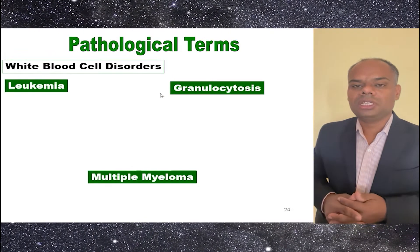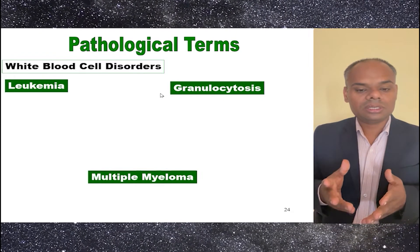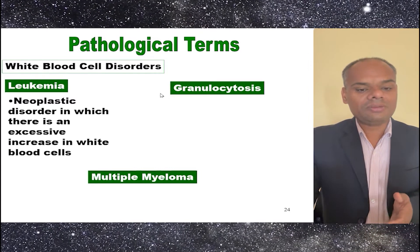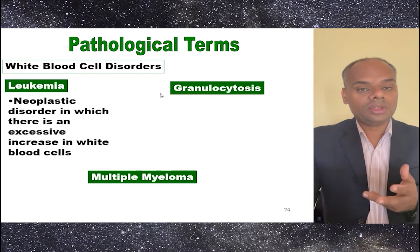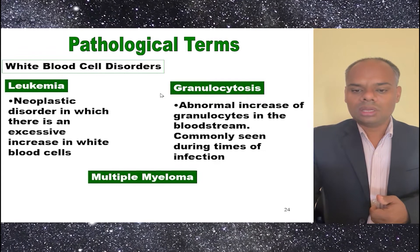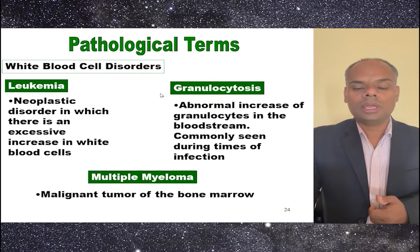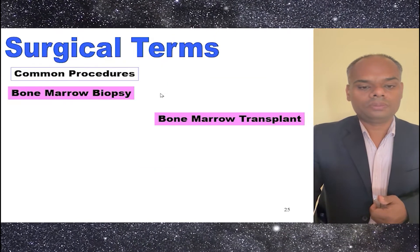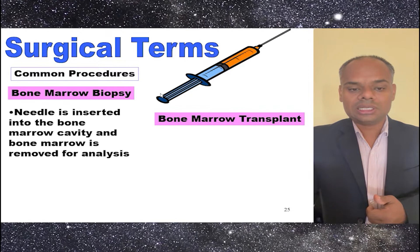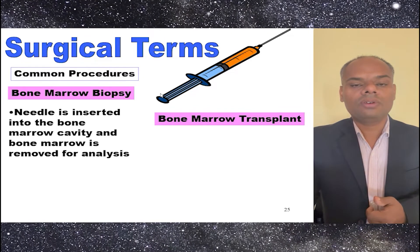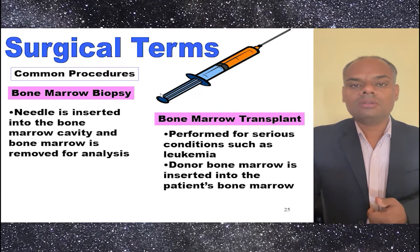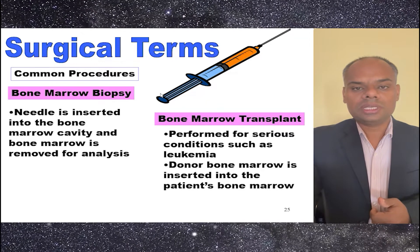White blood cell disorders can be divided into three types: leukemia, granulocytosis, and multiple myeloma. Leukemia is a neoplastic disorder with excessive increase of WBC cells, which can be due to increased infection. Granulocytosis is an abnormal increase of granulocytes in the bloodstream, commonly seen during infection. Multiple myeloma is a malignant tumor of bone marrow. Common procedures include bone marrow biopsy, where a needle is inserted into the bone marrow cavity and marrow is removed for analysis, and BMT, bone marrow transplant, performed for serious conditions like leukemia, where donor bone marrow is inserted into the patient's bone marrow.